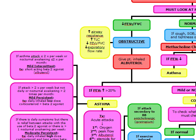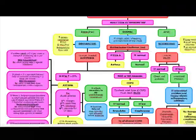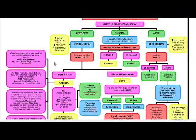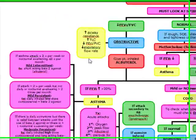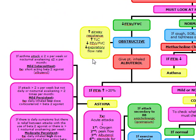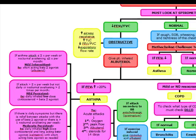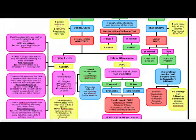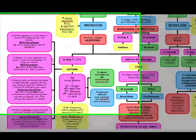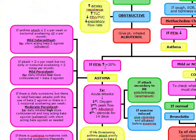Examples of obstructive lung diseases are COPD, asthma, chronic bronchitis, and bronchiectasis. To distinguish what type of obstructive disease it is, we give the patient a trial of albuterol. If the FEV1 is raised more than 20%, we've made our diagnosis of asthma.